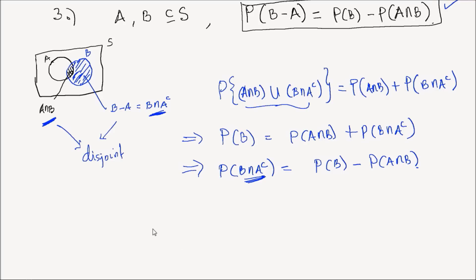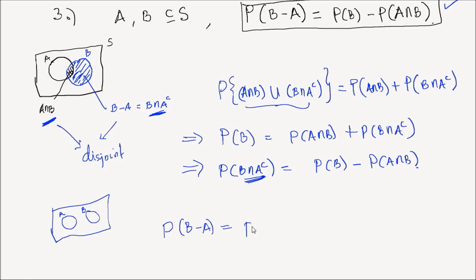What if A and B are disjoint? In that case, the probability of B minus A equals the probability of B minus the probability of A intersection B, which simply equals the probability of B — because their intersection is the empty set and the probability of an empty set is zero.